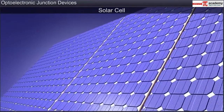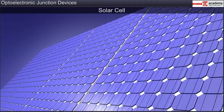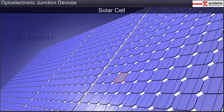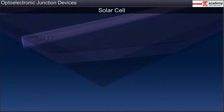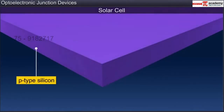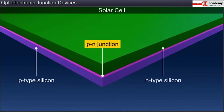Now let us consider a solar cell. A solar cell is a device that converts light energy into electrical energy. The solar panels that you see connected to solar power appliances are made of a large number of individual solar cells. A solar cell consists of a thin, flat wafer of P-type semiconductor on which a very thin layer of N-type semiconductor is grown to create a PN junction with a large surface area.